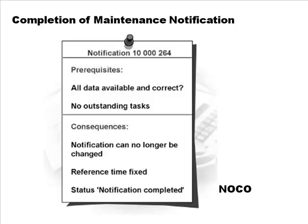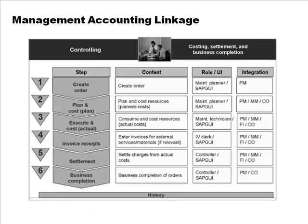Looking at management accounting integration: when you create a maintenance order, you calculate an estimated cost — that's the management accounting activity of cost planning. You can plan by cost element or activity-based costing. When you execute the order, you consume resources such as materials and work center capacities, and all of those are recorded so you can determine the total cost of the order.